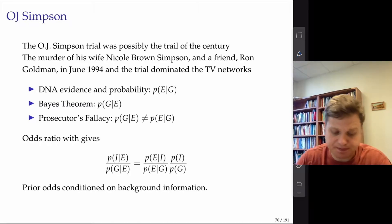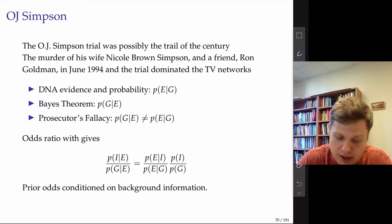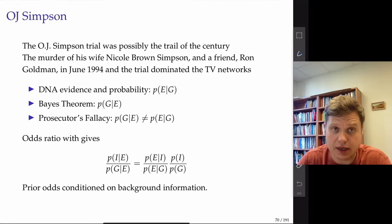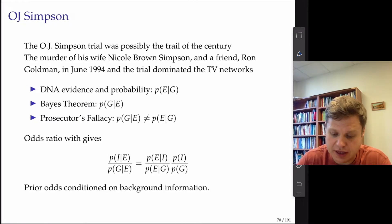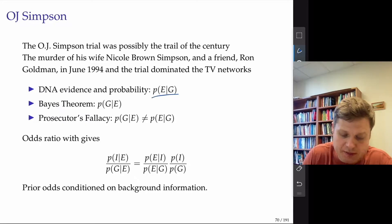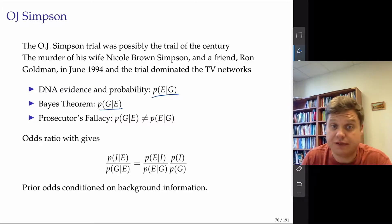We have the probability of the evidence — DNA evidence in the case of O.J. Simpson. The evidence comes in the form of a likelihood: probability of evidence given that O.J. Simpson is guilty. What we're really interested in is the probability that he is guilty given the evidence. The prosecutor's fallacy is confusing those two things, assuming they are equal.